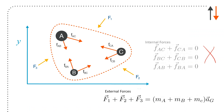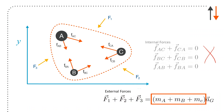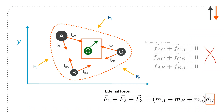The external forces cause the motion. So I have F1, F2, and F3 — those three external forces — and then the system acceleration, which is (M_A + M_B + M_C) times the acceleration of the center of mass G. G goes off in some direction, and although each particle may go in a separate direction, the system responds to the total external forces applied.